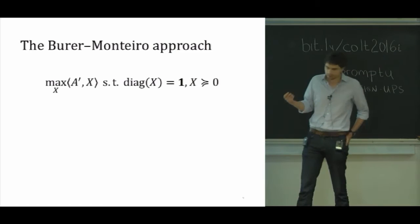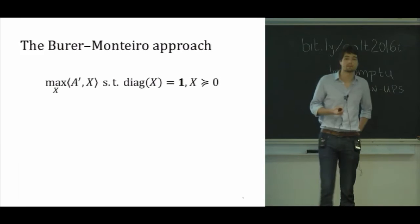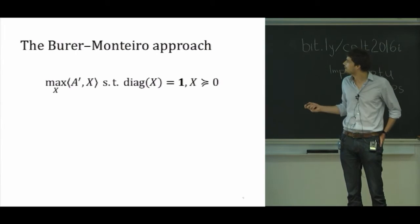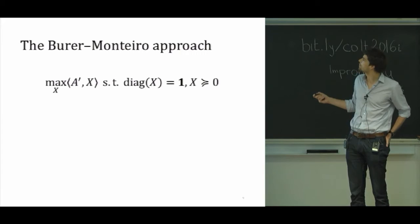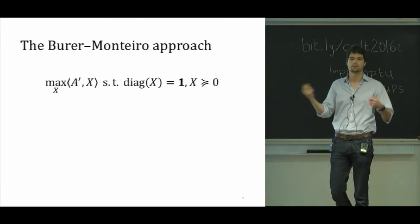So we have this semi-definite program. And I made a statement that classical methods to solve it, interior point methods, tend to take a lot of time if N is big. Now the main reason for that is twofold. One is that if N is large, X is going to be N squared large. So the dimensionality of this problem is pretty big. And also, it's not so easy to enforce this conic constraint that connects all of the entries together in a subtle way.